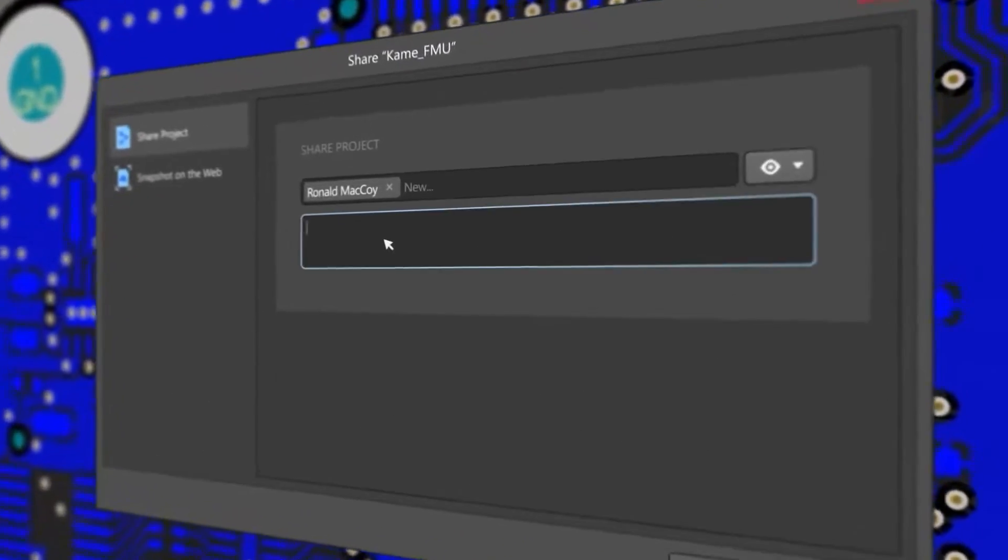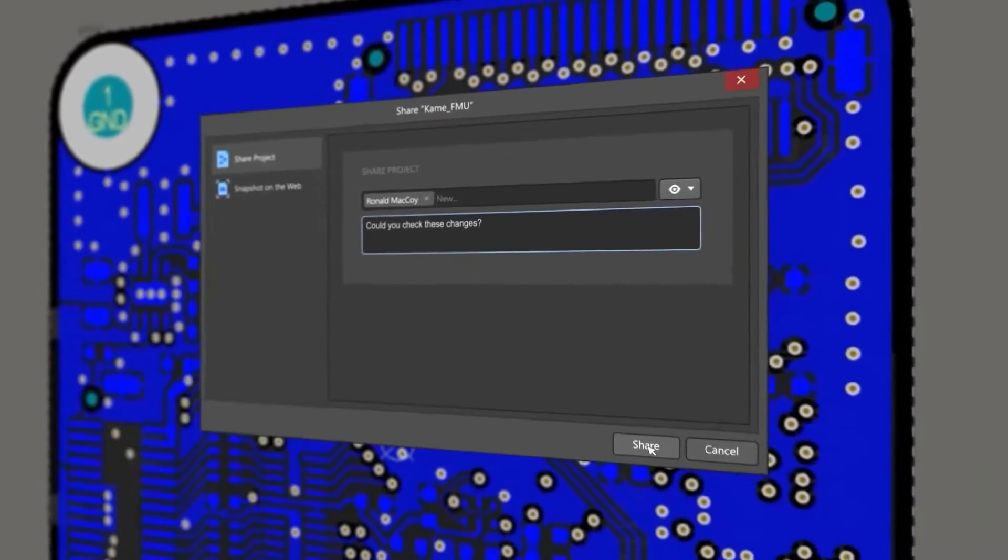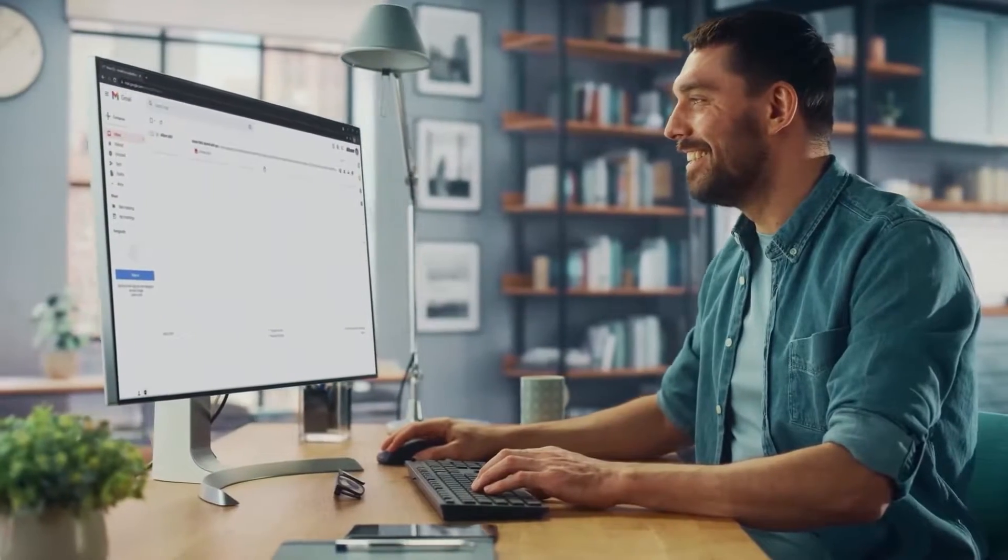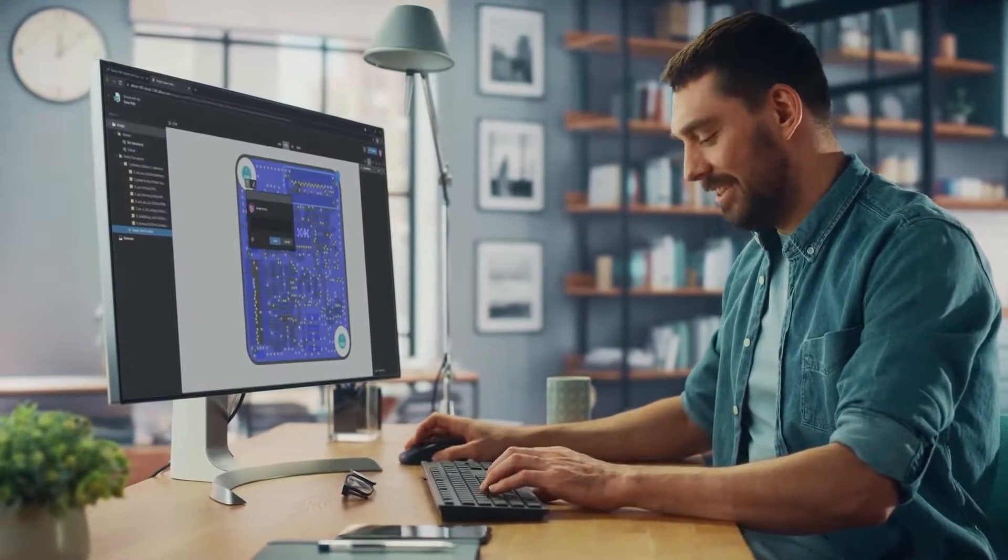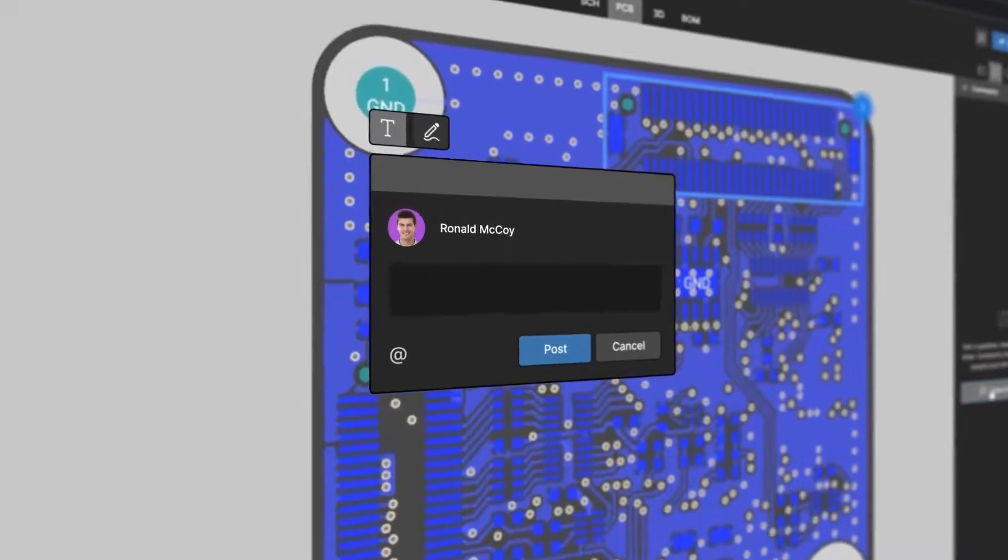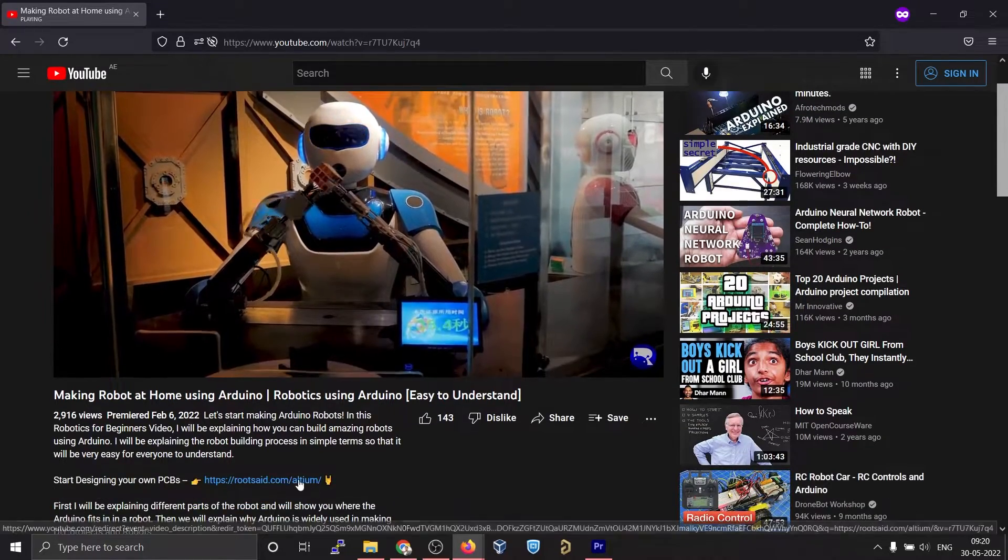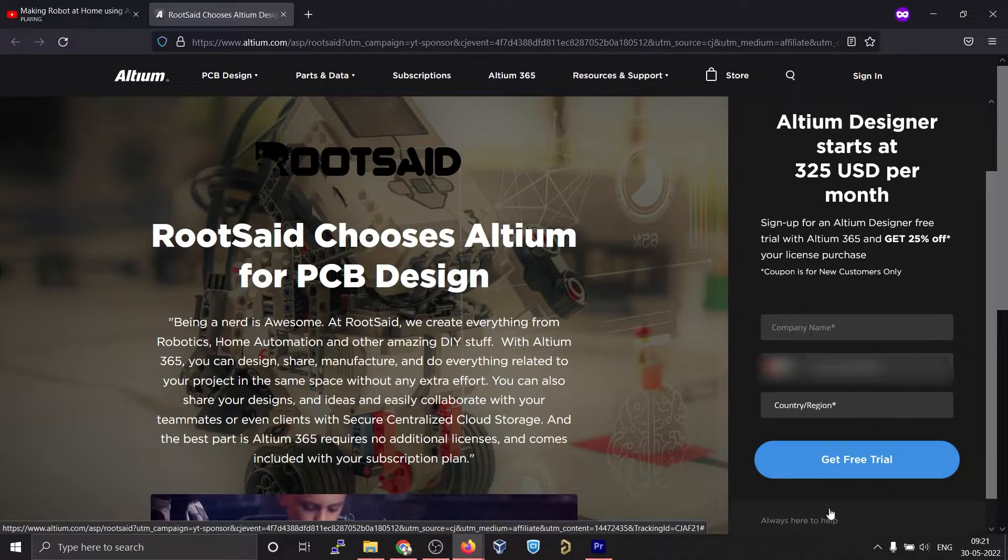Altium subscription includes Altium 365, which will let you design, share, and manufacture your project in one place. Secure centralized cloud storage lets you share designs and ideas with teammates or clients. You can download and install free trial version from the description down below, and if you are a student you get a six month full license absolutely free.